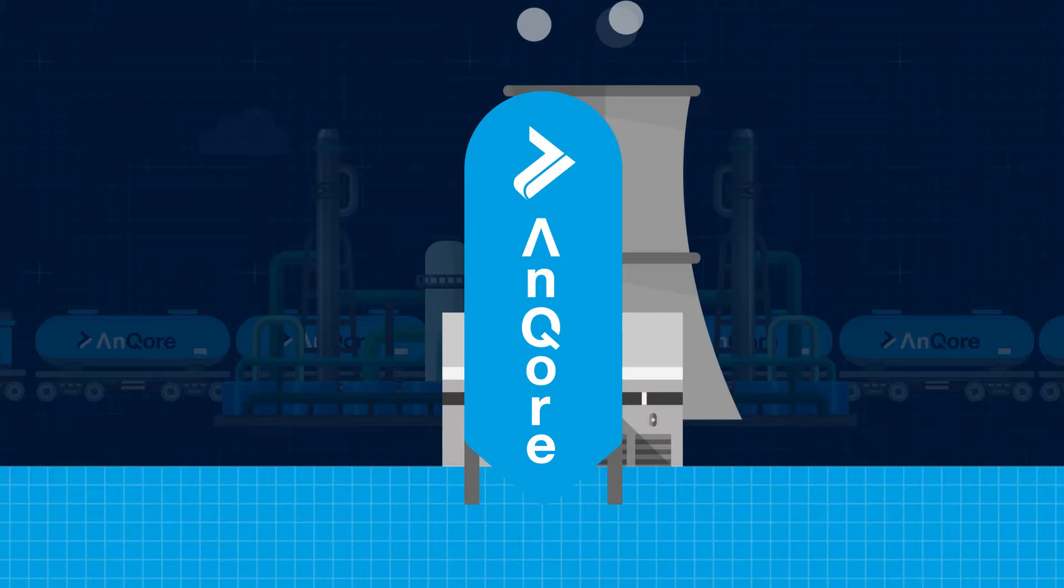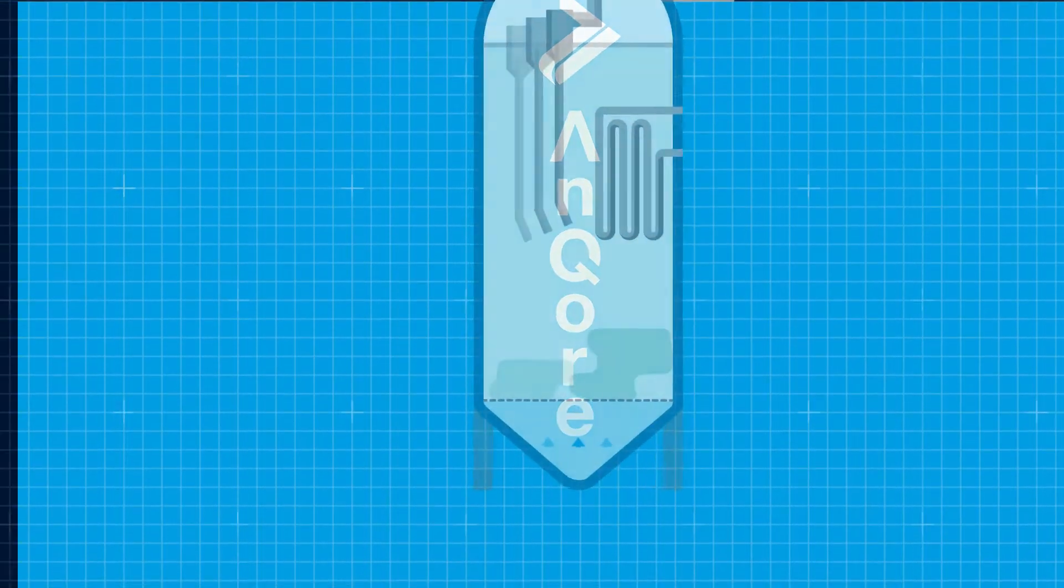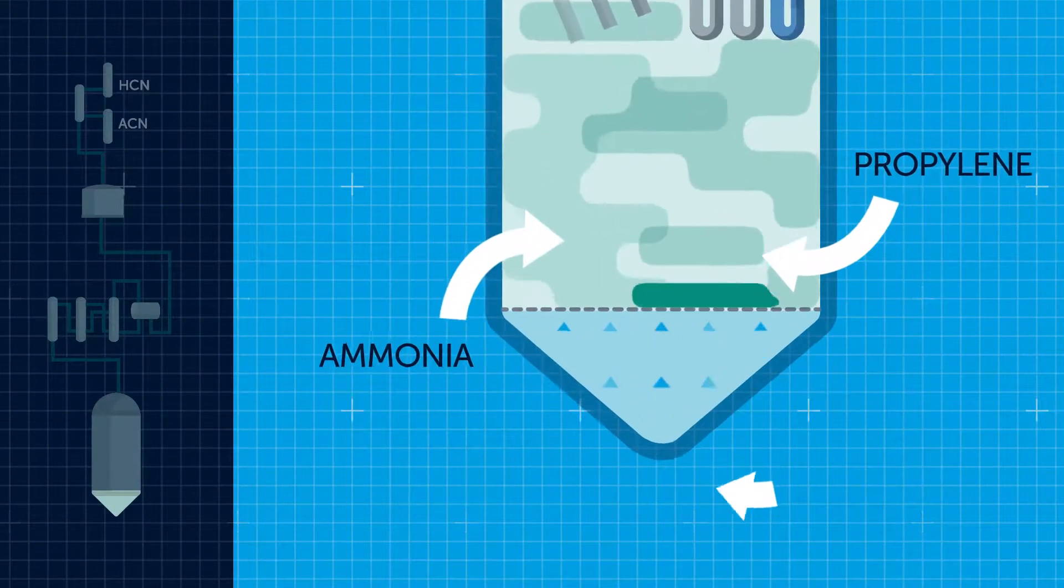The production of acrylonitrile is a complex process which begins by reacting together propylene, ammonia and air.